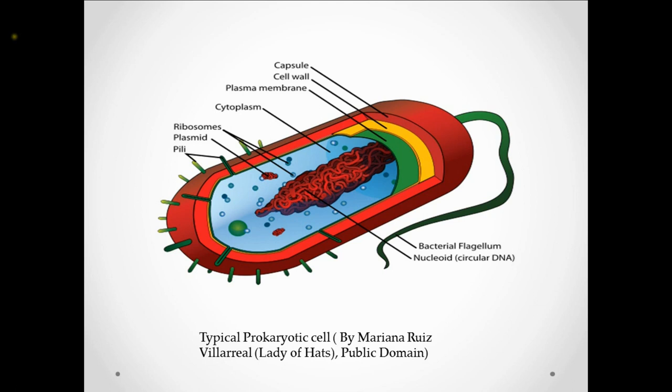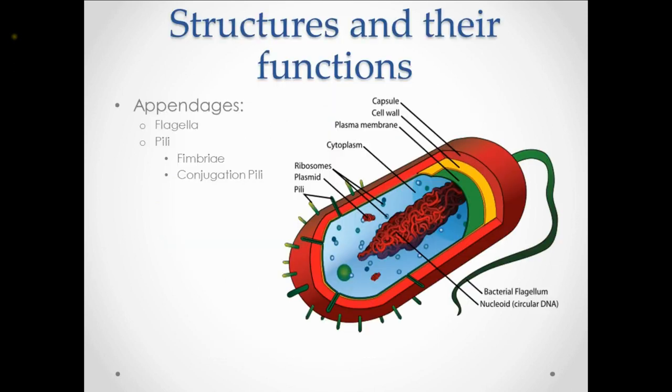Looking at the structure of the prokaryotic cell, you will probably see that it is missing organelles. There is no nucleus or any other membrane-bound structures that you would see in a eukaryotic type cell. So let's look at the individual structures and their functions of the prokaryotic cell. When we do this, we're going to divide it into three groups: the appendages, the external structures, and the internal structures.